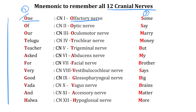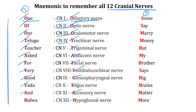The first O corresponds to olfactory nerve, CN1. The second O corresponds to optic nerve, CN2. The third O stands for oculomotor nerve, CN3. The first T stands for trochlear nerve, CN4. The second T stands for trigeminal nerve, CN5. A stands for abducens nerve, CN6. F stands for facial nerve, CN7. V stands for vestibulocochlear nerve, CN8. G stands for glossopharyngeal nerve, CN9. V stands for vagus nerve, CN10. A stands for accessory nerve, CN11. And halwa stands for hypoglossal nerve, CN12.